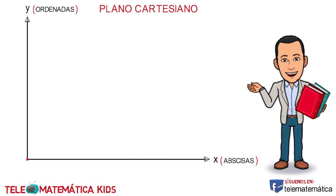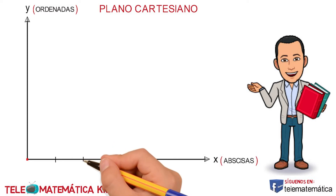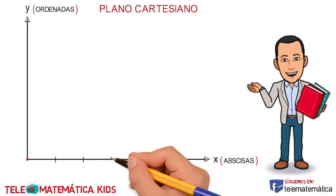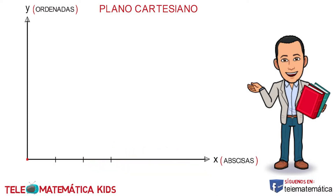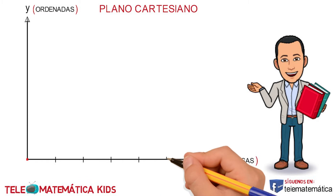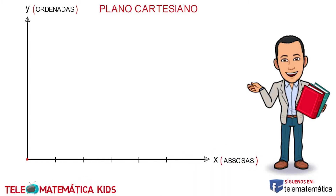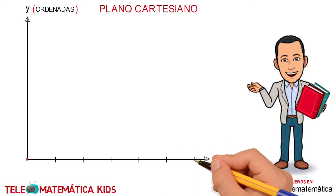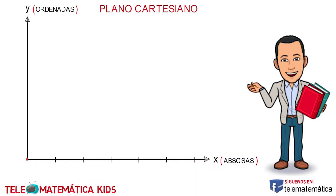Ahora bien, el eje X se divide en partes iguales a partir del origen de coordenadas. Luego, a la derecha del origen de coordenadas, que se toma como cero, se enumera de forma ascendente con valores positivos.